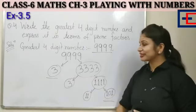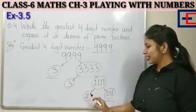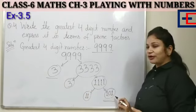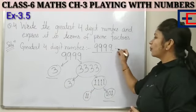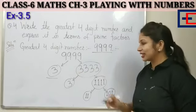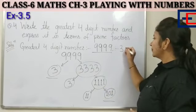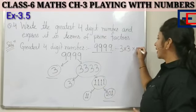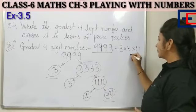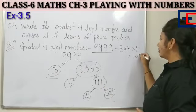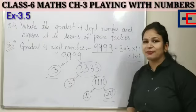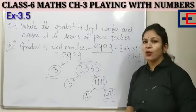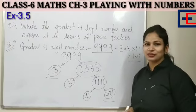Then, what are the prime factors? 3, 3, 11 and 101. Then, we express it in prime factorization. How do we write? 3 multiply by 3, multiply by 11, multiply by 101. This is how we do prime factorization. Okay, beta, let's proceed to the next question. Thank you.